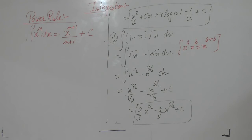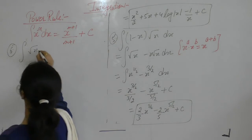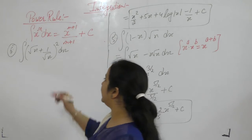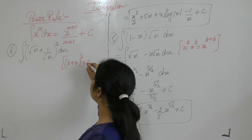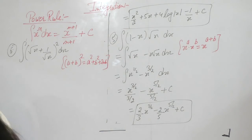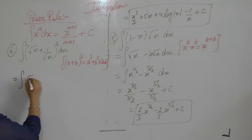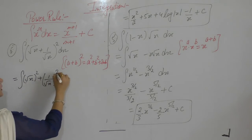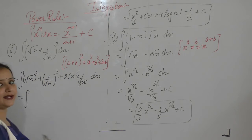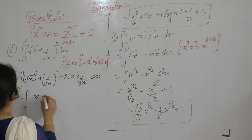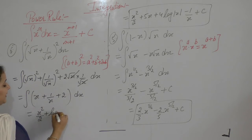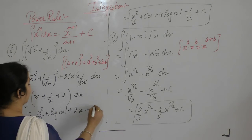Example 6: Integral of (√x + 1/√x)² dx. Using the identity (a+b)² = a² + b² + 2ab: (√x)² + (1/√x)² + 2·√x·(1/√x) = x + 1/x + 2. Integrating each term: integral of x is x²/2, integral of 1/x is log|x|, and integral of 2 is 2x. So the answer is x²/2 + log|x| + 2x + C.